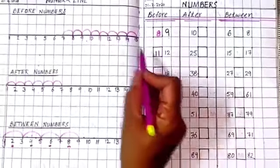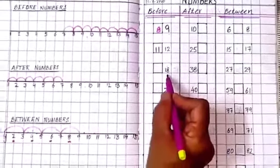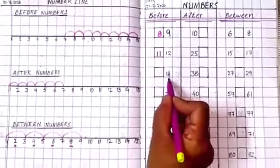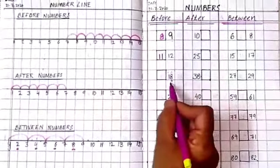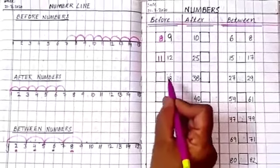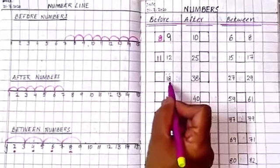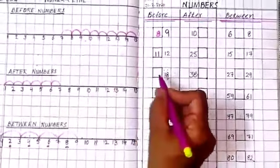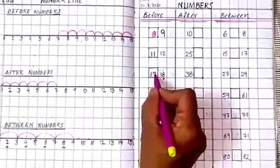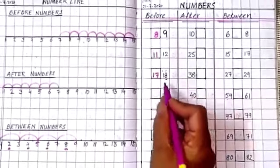Now before 18. 18 is not here. And here you have to keep in mind, you have to check 1's place. This is 1's, this is 10's. So change the 1's place. So 8, you can see 1's place 8. Before 8, 7 is here. So your number is 17.